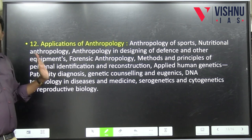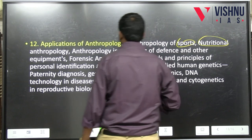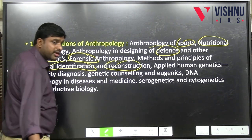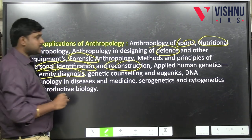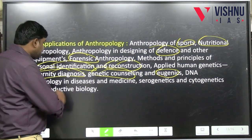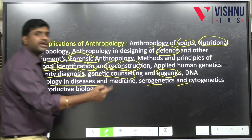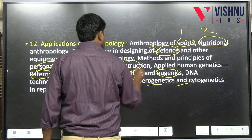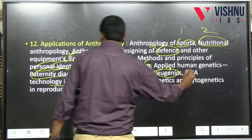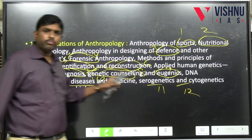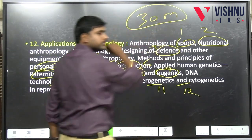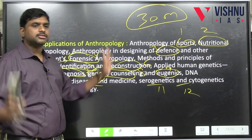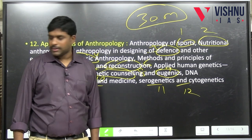Unit 11: applications of physical anthropology — sports, nutrition, defense, forensics, personal identification, reconstruction of dead bodies, paternity diagnosis, genetic counseling, eugenics, DNA technology in disease and medicine, and serogenetics. Compulsory one question will come — 12 application topics worth 30 marks if mastered. Notes of one page each, add relevant current affairs.